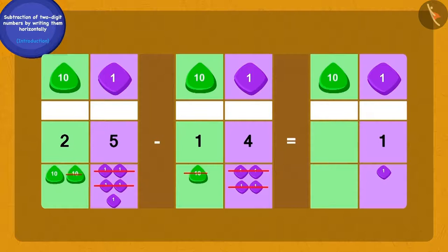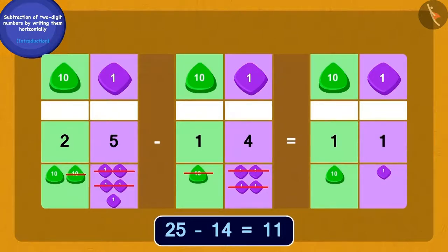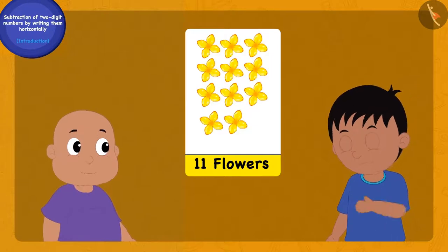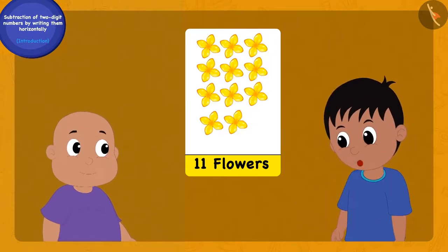...then how many tens will we be left with? One ten. In this way, Chanda's yellow flower garland has 11 more flowers than her garland of red flowers. 'Did you understand, Raju?'